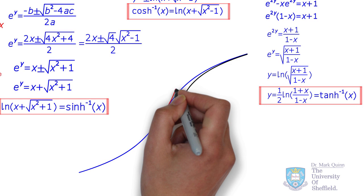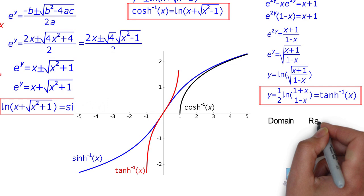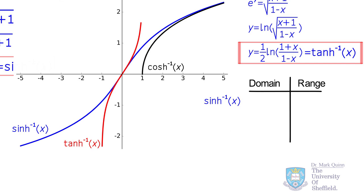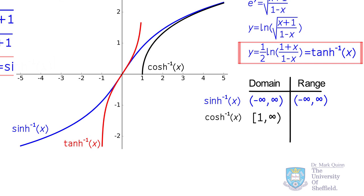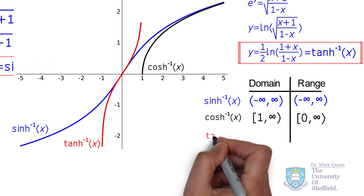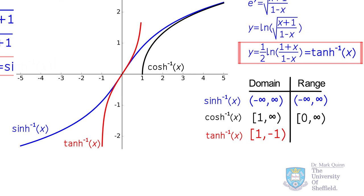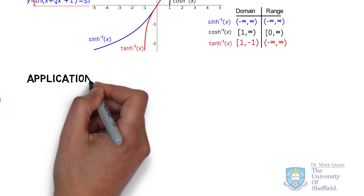Visualizing these functions allows us to determine their domains and ranges. Inverse hyperbolic sine has all real numbers as its domain and range. For inverse hyperbolic cosine, the domain starts at and includes 1, continuing to infinity, and the range includes 0 up to infinity. The domain of inverse hyperbolic tangent includes values between but not including minus 1 and 1, and its range is all real numbers between minus infinity and infinity.